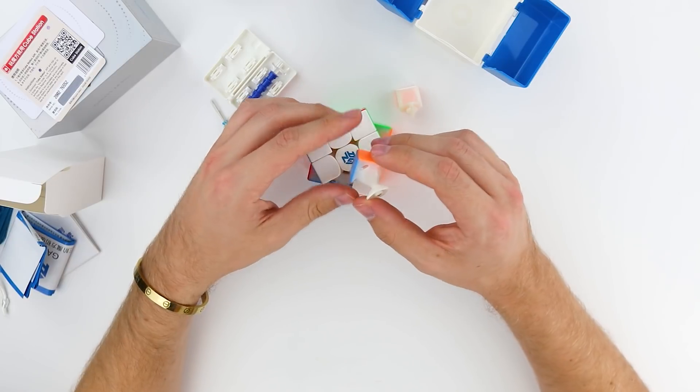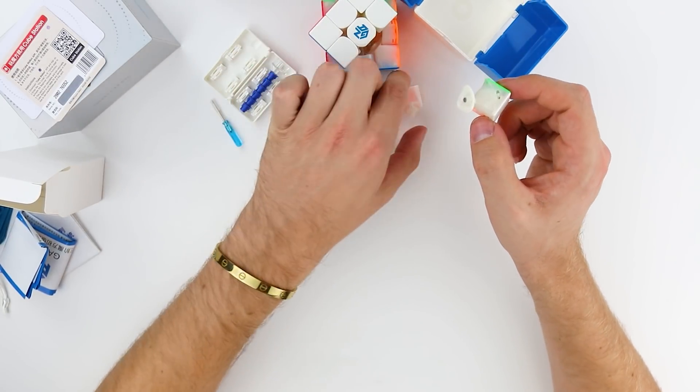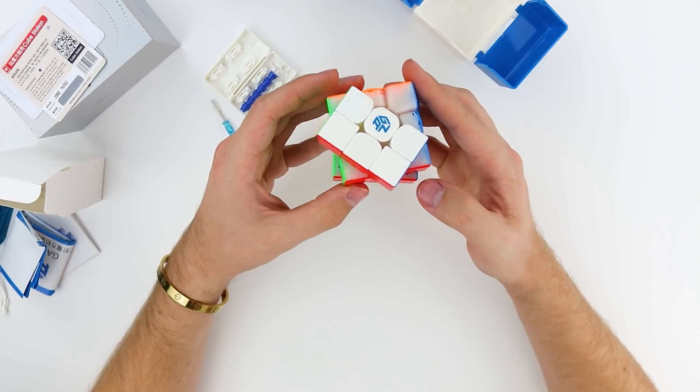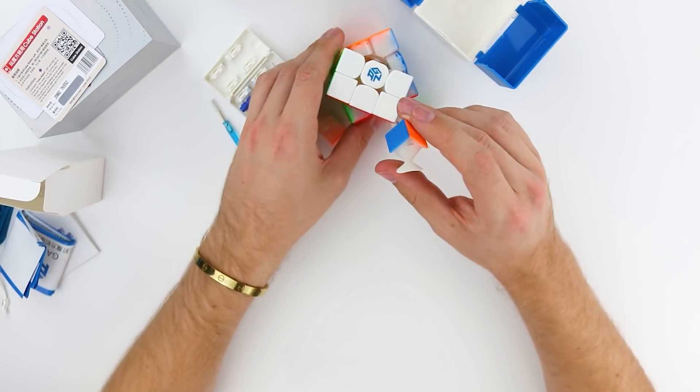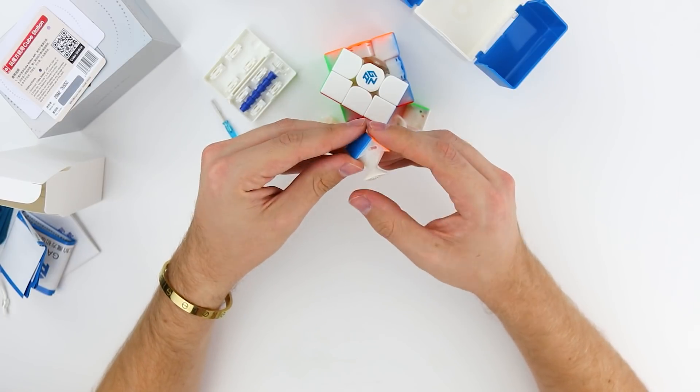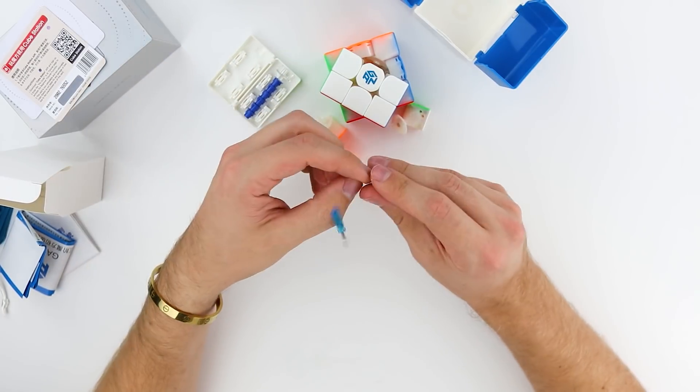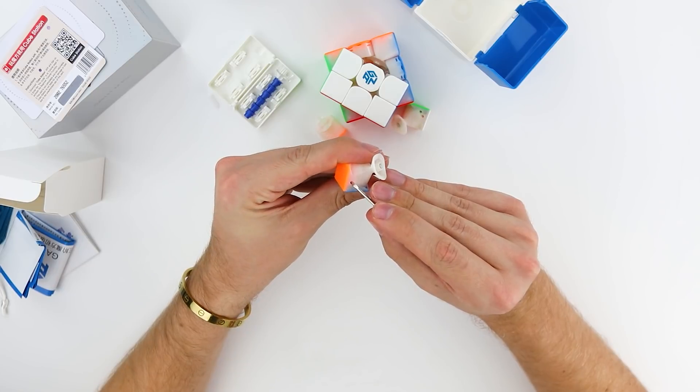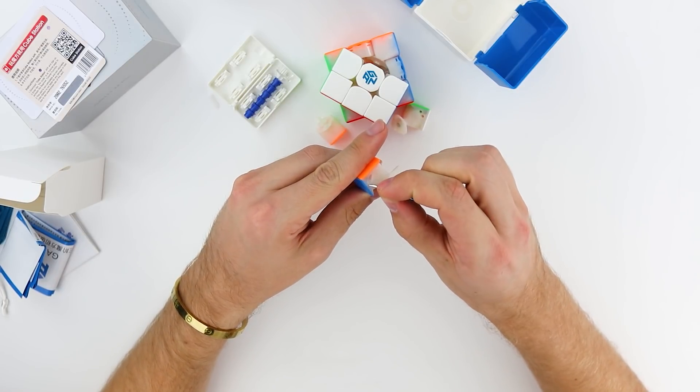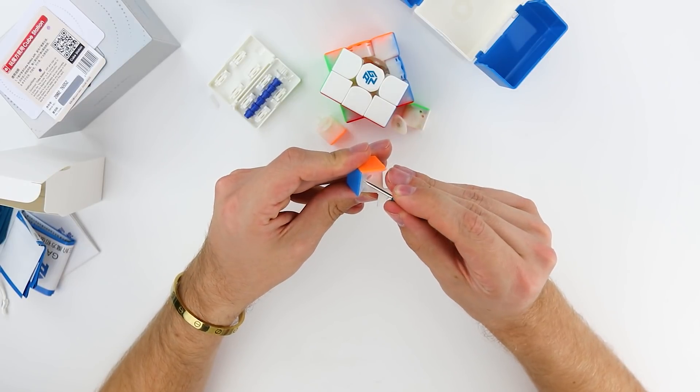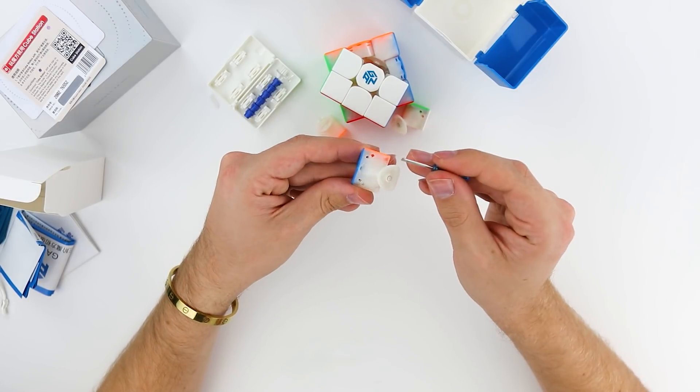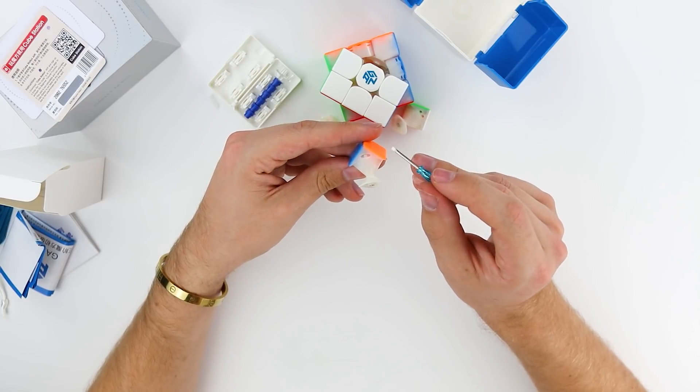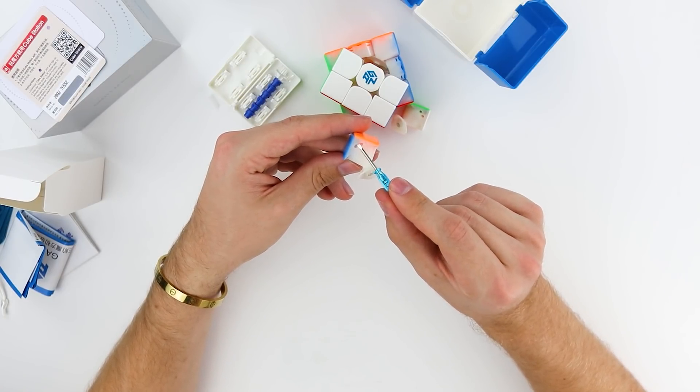So there are tabs on the corner and the edges that allow you to adjust the magnet strength. I think it's maybe just on the corners, not on the edges. So the cube actually should be coming set on the middle setting. So I don't know why this one did not. And this is why you need the screwdriver. Because you can't really get in there with your fingers. So use the flat screwdriver just to really gently move the magnets into the middle position. So if I am correct, this is going to be setting one, two, and three.